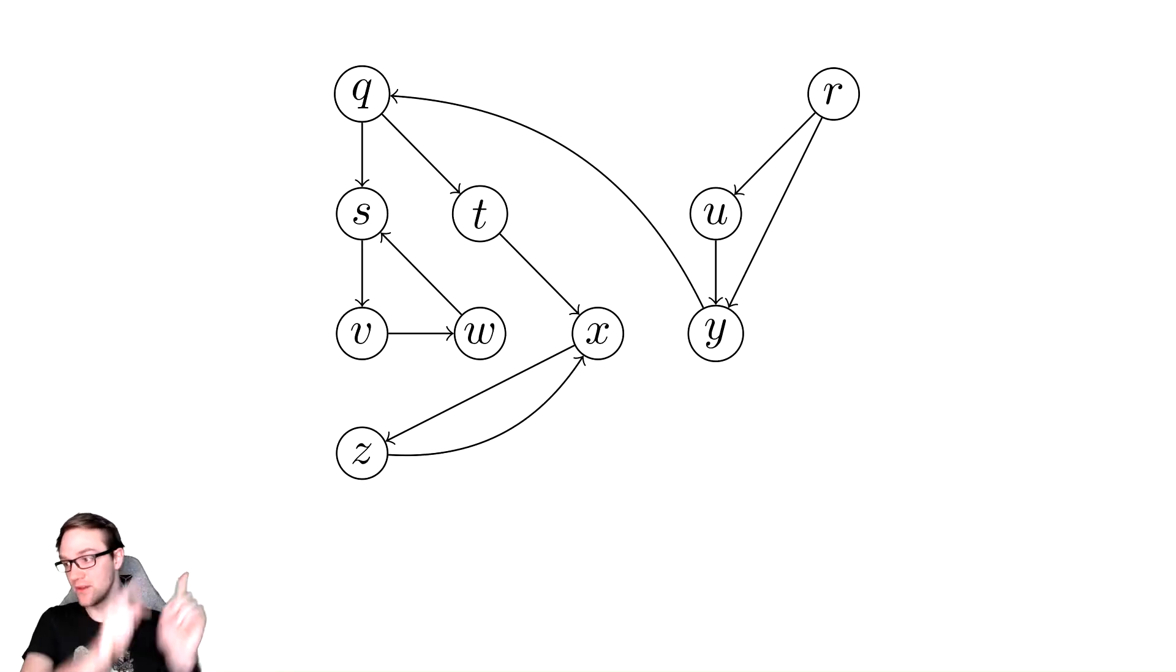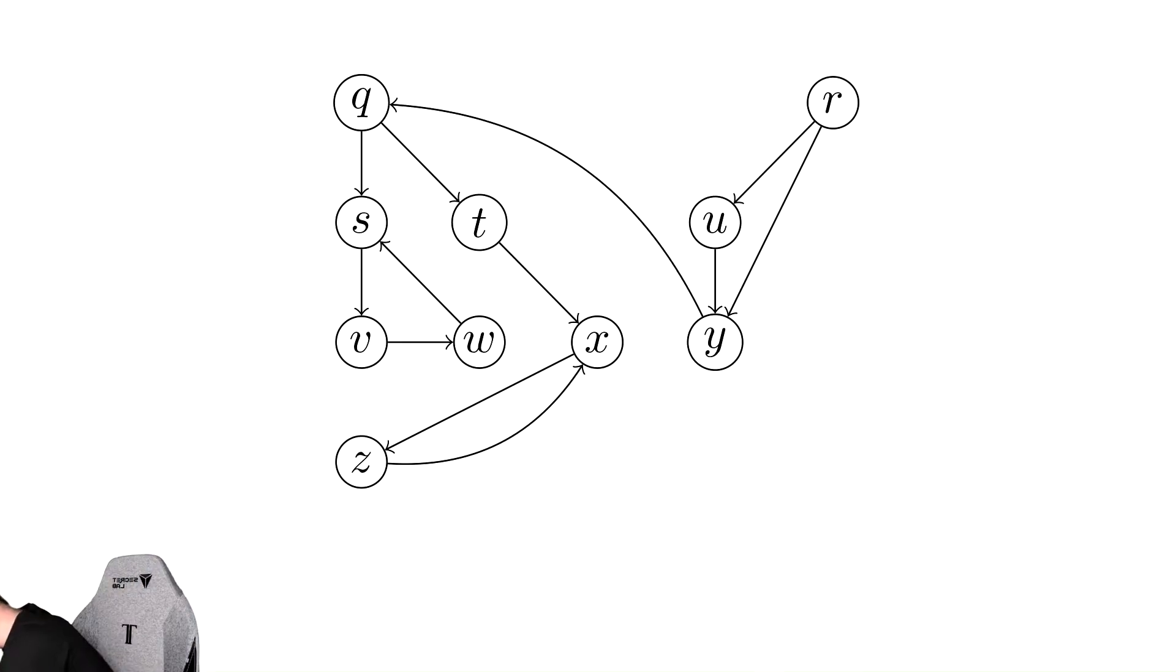We're going to do one more example. We have a graph here and we're going to analyze this graph by doing depth-first search starting at q. So we start at q, we colored these blue to signify that we were starting. We go down to s, we go down to v, we go down to w.